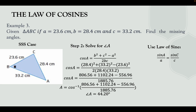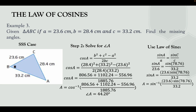Using the Law of Sines: sin A / a = sin C / c. Since angle C and side c are known, substitute: sin A / 23.6 = sin 78.76° / 33.2. Cross-multiplying: sin A = (23.6 × sin 78.76°) / 33.2. Applying sine inverse (shift sin) and inputting all values gives angle A = 44.20° — the same answer, confirming both methods agree.